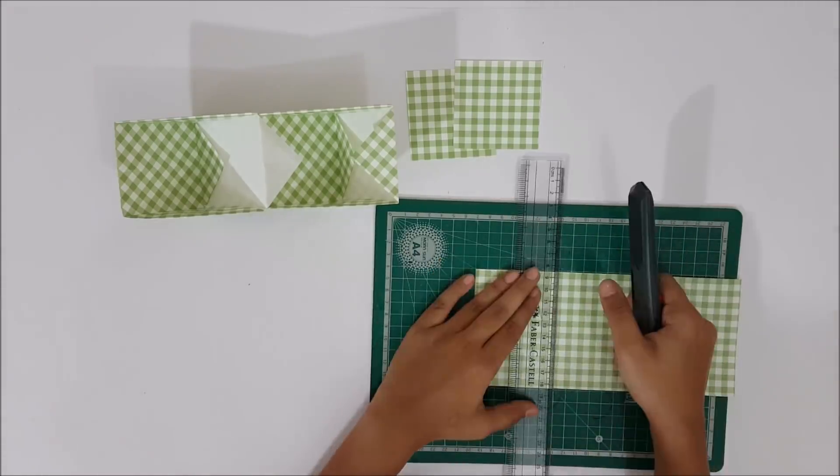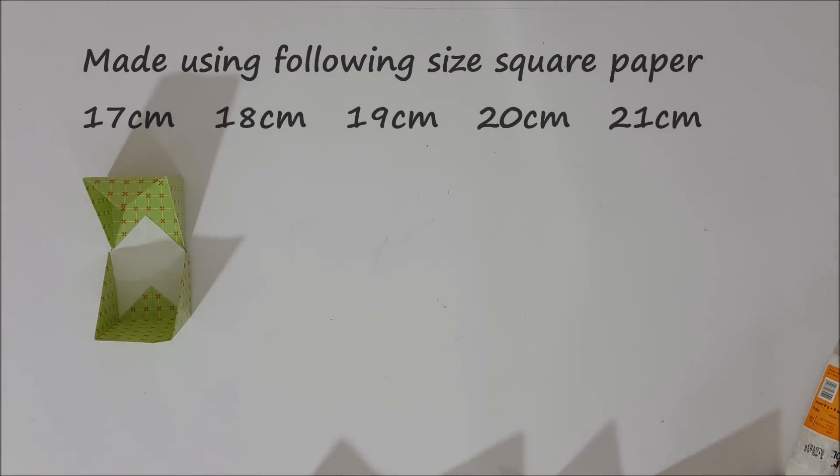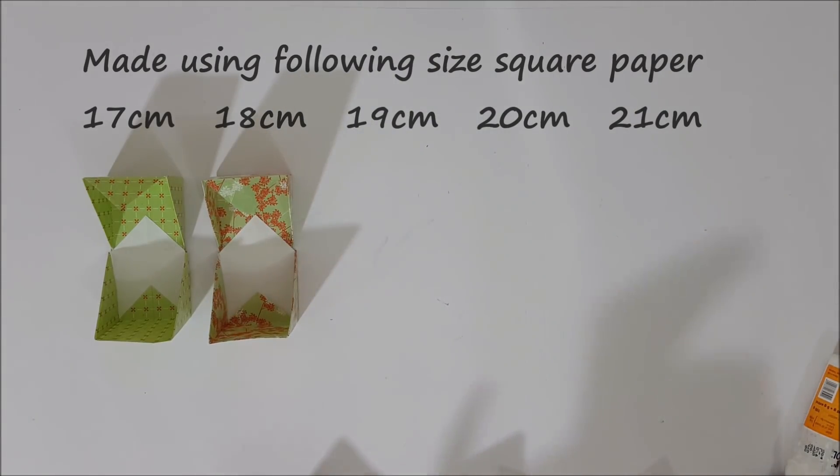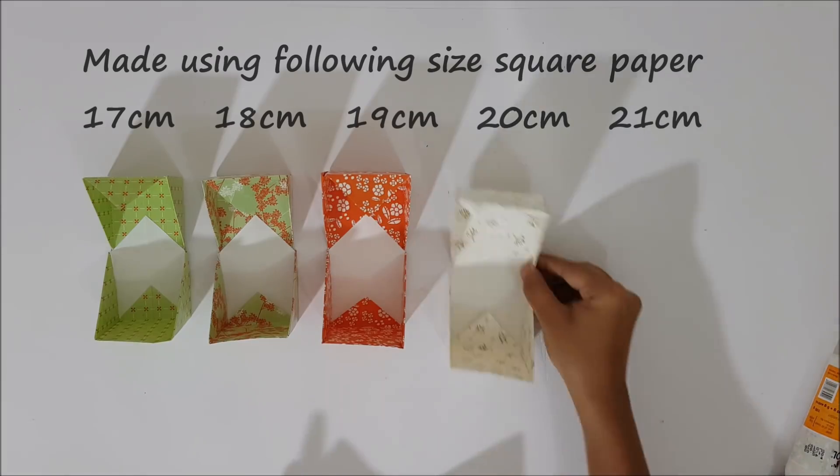When we have all 4 cutouts, keep them aside - we will need them later. Now make 4 more cubes using 17 by 17cm square, 18 by 18cm square, 19 by 19cm square, and 20 by 20cm square.